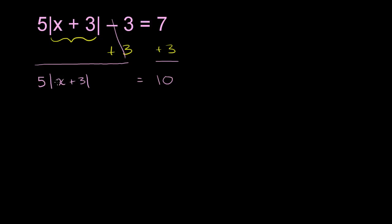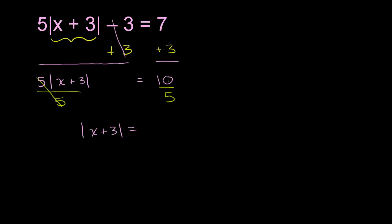Now we have 5 times the thing we want to isolate. The best way to isolate it completely is to divide both sides of this equation by 5. We divide both sides by 5 so these cancel out — 5 times something divided by 5 is just that something. So we're left with the absolute value of x plus 3 is equal to 10 divided by 5, which is 2.